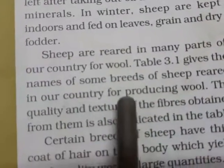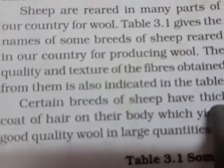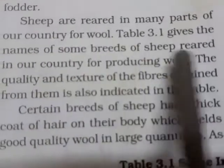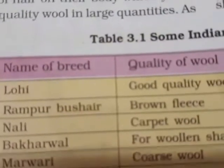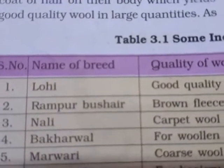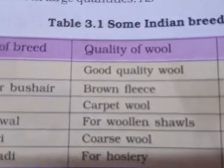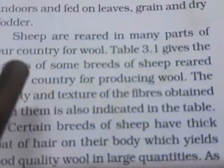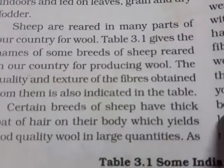Sheep are reared in many parts of our country for wool. Table 3.1 gives some breeds of sheep reared in our country for producing wool, and also indicates the quality and texture of the fiber obtained from them. Different types of sheep give different qualities of wool, as shown in this table.